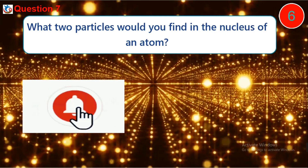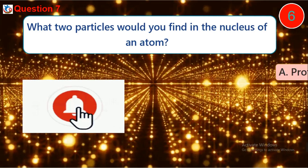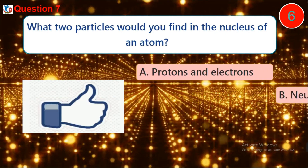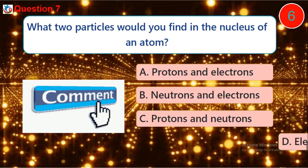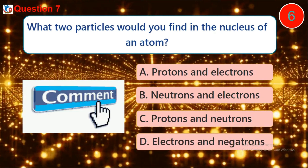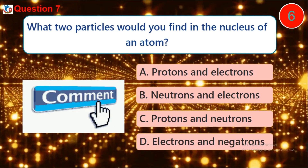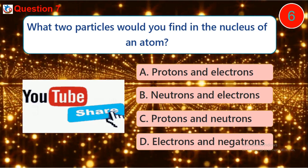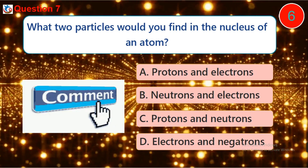Question 7. What two particles would you find in the nucleus of an atom? A. Protons and electrons. B. Neutrons and electrons. C. Protons and neutrons. D. Electrons and negatrons.